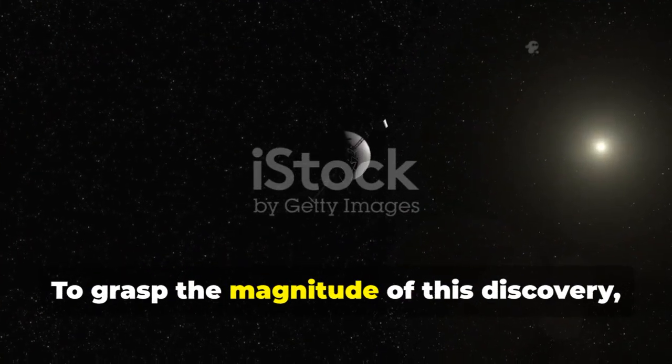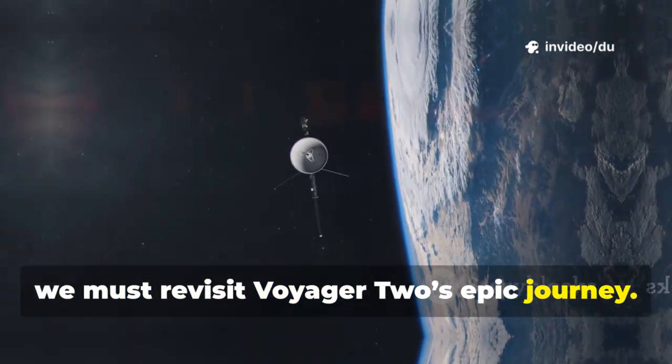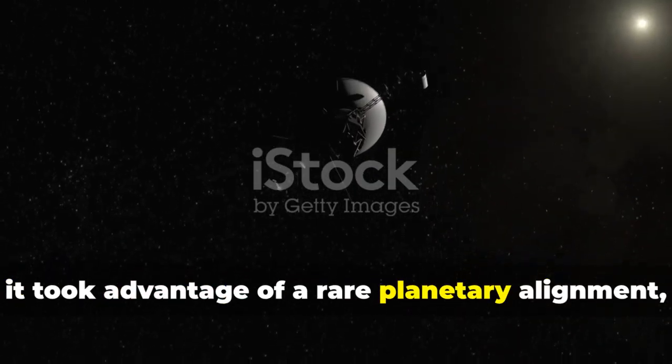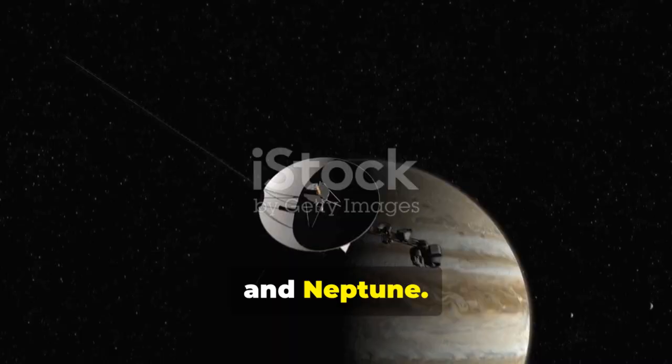To grasp the magnitude of this discovery, we must revisit Voyager 2's epic journey. Launched in 1977, it took advantage of a rare planetary alignment, using gravity assist to visit Jupiter, Saturn, Uranus, and Neptune.